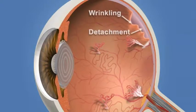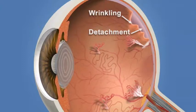If similar vessels grow abnormally in the front of the eye, they can block the drainage channels of the eye and cause high pressure and possibly glaucoma. Both central and peripheral vision can be affected by PDR.